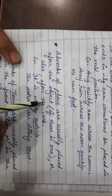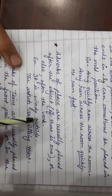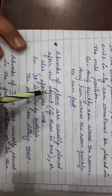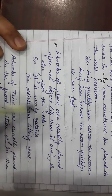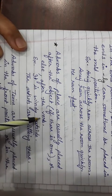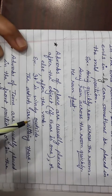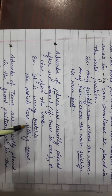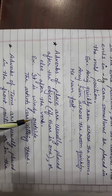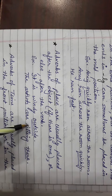Then adverbs of place are usually placed after the object if there is one object, or else after the verb. If there is one object, we use it after the object, but if there are more, we use it after the verb.